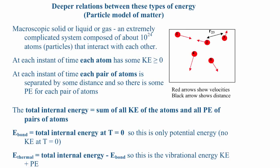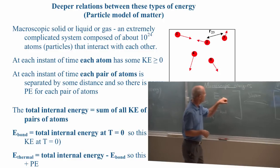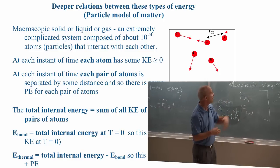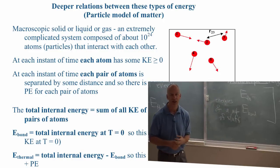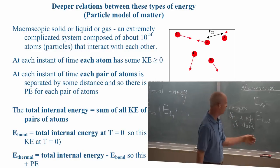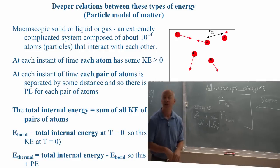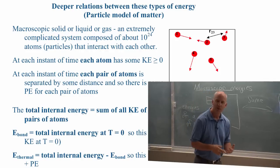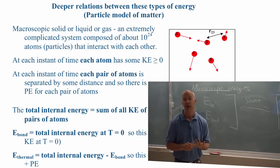We are going to start putting together ideas from the last few weeks, and we're going to start getting careful and quantitative about what thermal energy is. That's a macroscopic energy — the energy of a whole bunch of atoms, Avogadro's number, or a mole of atoms, some number of moles — and bond energy, and what those things are in terms of microscopic energies.